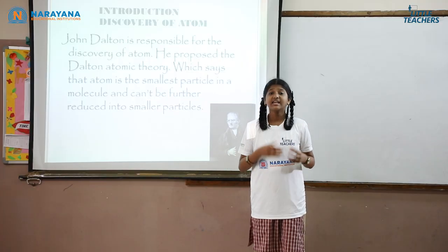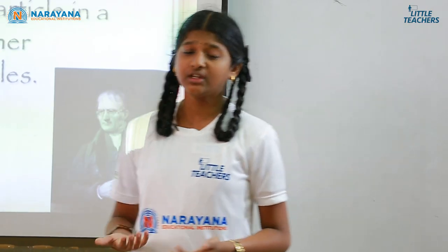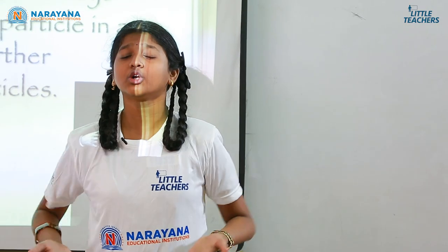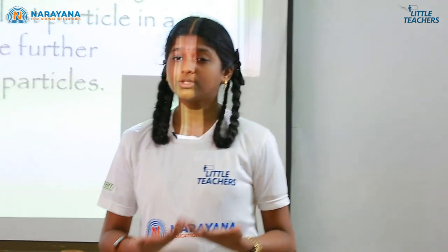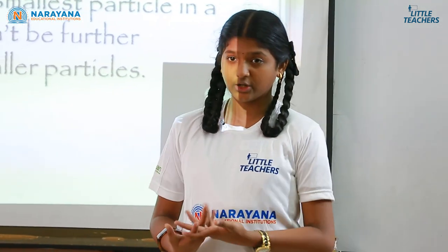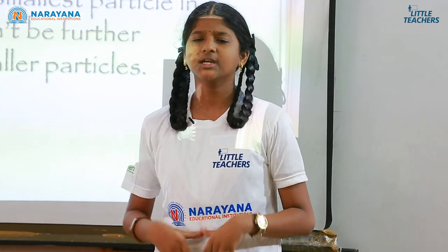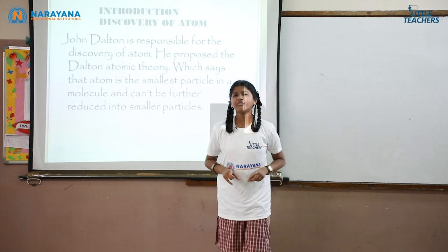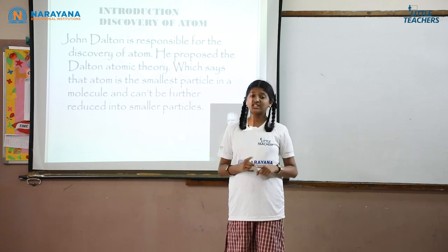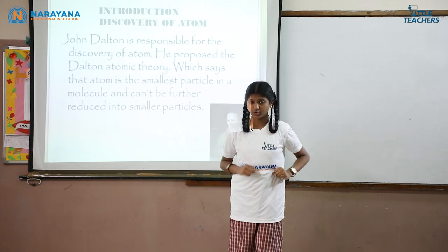As the years passed, in 1897, Sir Joseph John Thompson introduced the concept of an electron, which he found out during the cathode ray tube experiment. Speaking of an electron, let's know what an electron is.